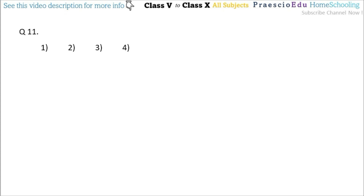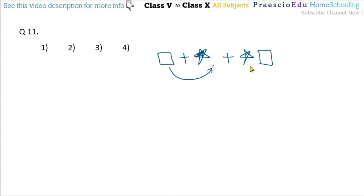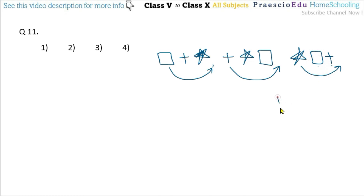Question number 11: complete the sequence observing the pattern. Three terms are given: square, plus sign, then solid star; then plus sign and star and square — the square is moving to the right end. Then the plus sign moves right too, starting with star, then square, then plus sign. Continuing this, the star will be at the end of the question mark with square and plus sign before it. This pattern is given in option number 1, which is the correct answer. Thank you.